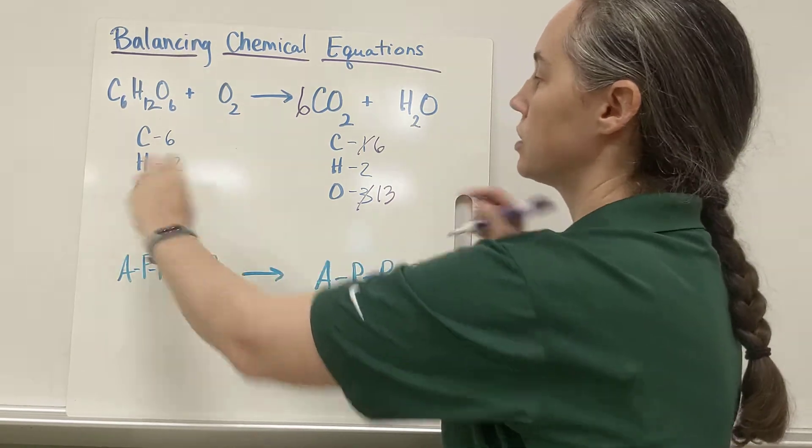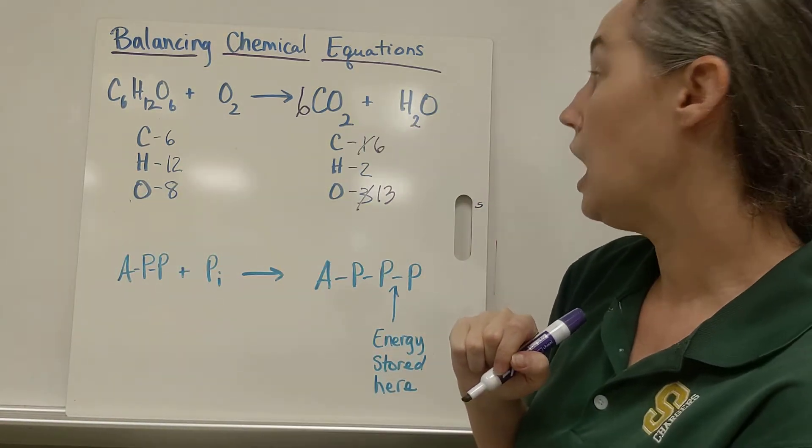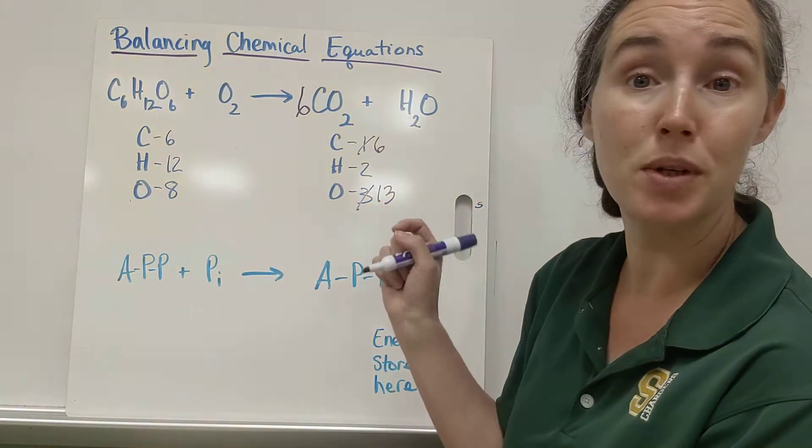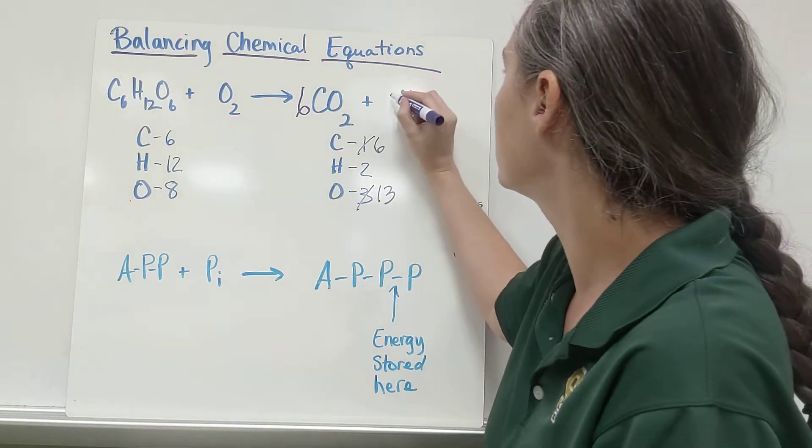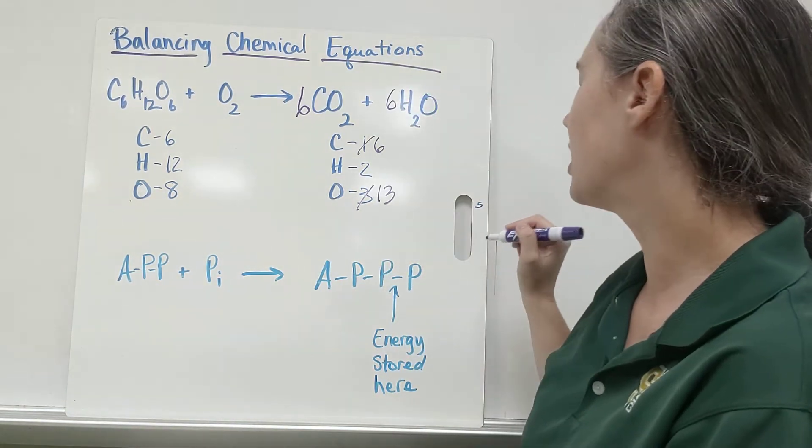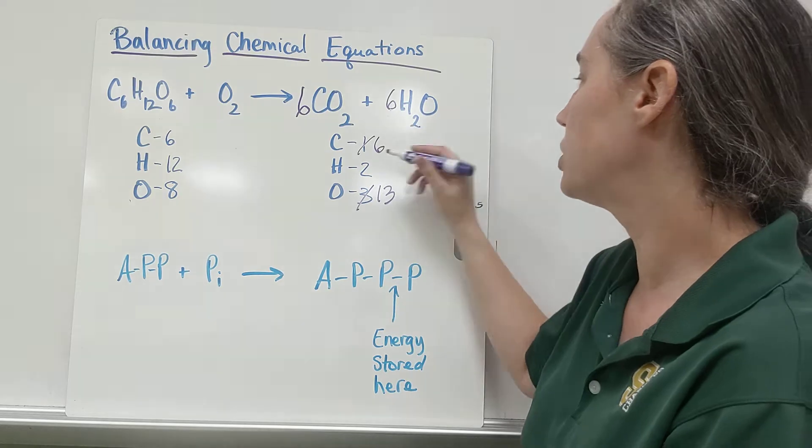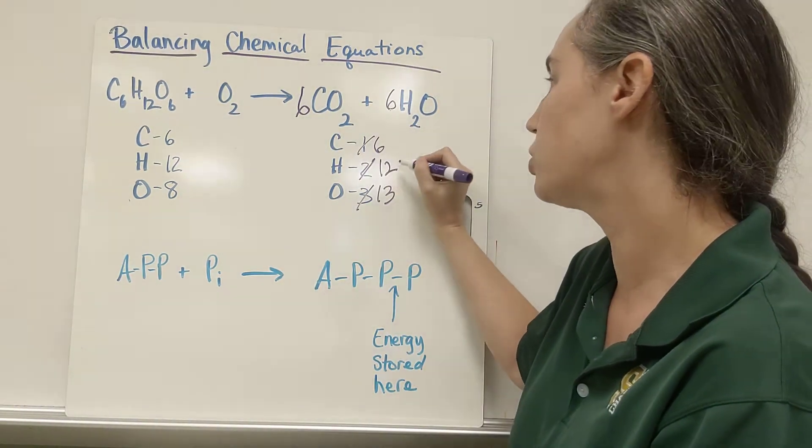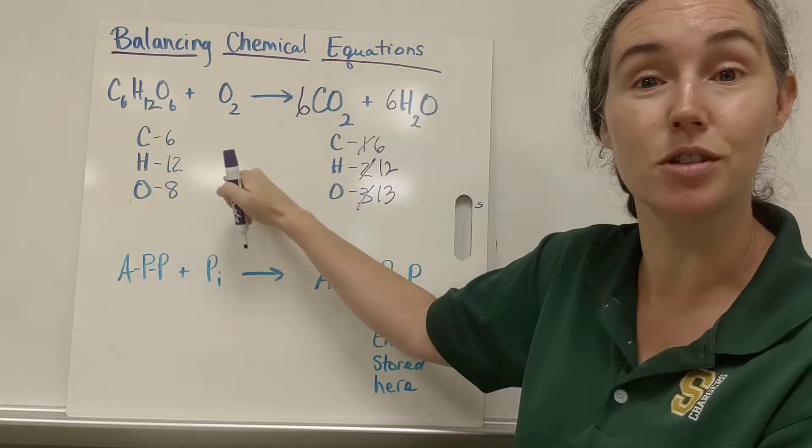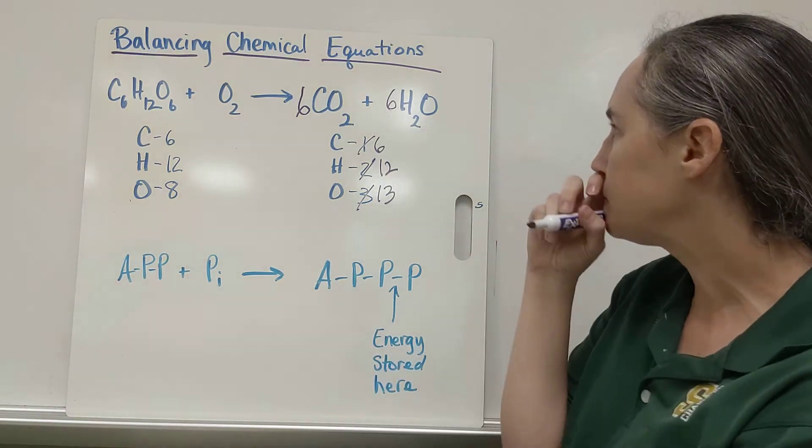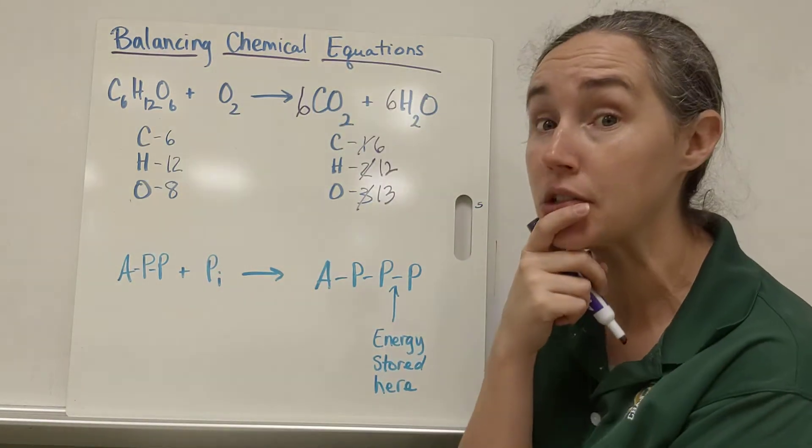Okay, another easy fix. Let's put a six in front of the H in water, so now six times two is twelve. My two has become a twelve, and now my hydrogens are balanced. But my oxygens are still off.